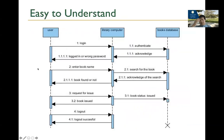Let's look at an example. You have different agents or objects: a user, a library computer, and a database for books. The user logs into the library computer, which authenticates with the database. The database acknowledges, and you either log in or receive a wrong-password notification. If you log in successfully, you can type a book name to search. The database returns results, and if found, you can request to issue the book, change its status, and then log out.